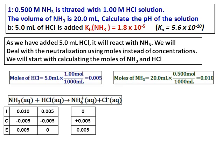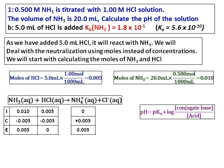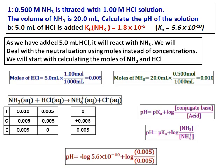When we have the moles, use the Henderson-Hasselbalch equation — I don't need to convert to concentration using the volume. Substitute the corresponding values and get the pH, which is equal to 9.3.